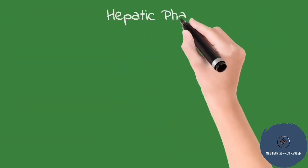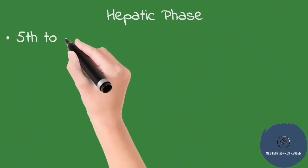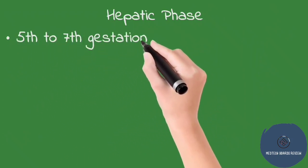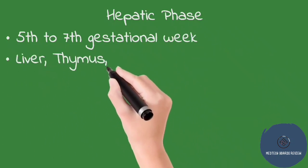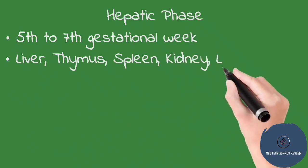Now, the second phase is the hepatic phase, which starts at the 5th to 7th gestational or pregnancy week. The major organ producing blood cells during this phase is the liver.